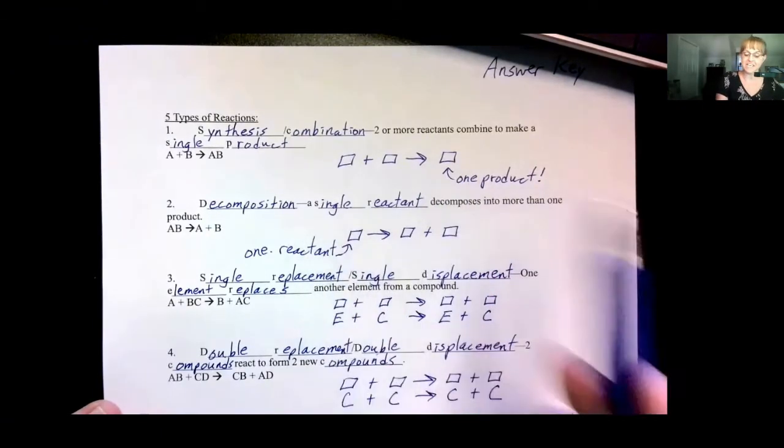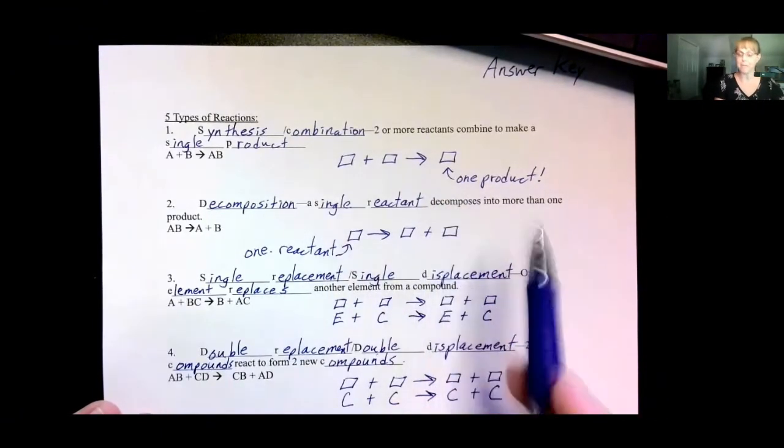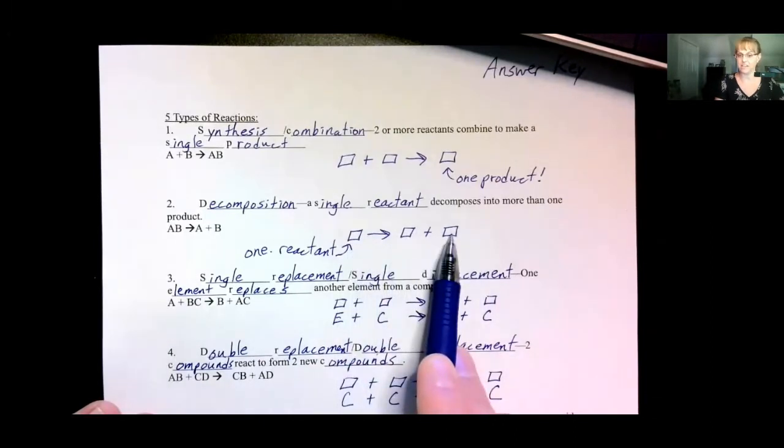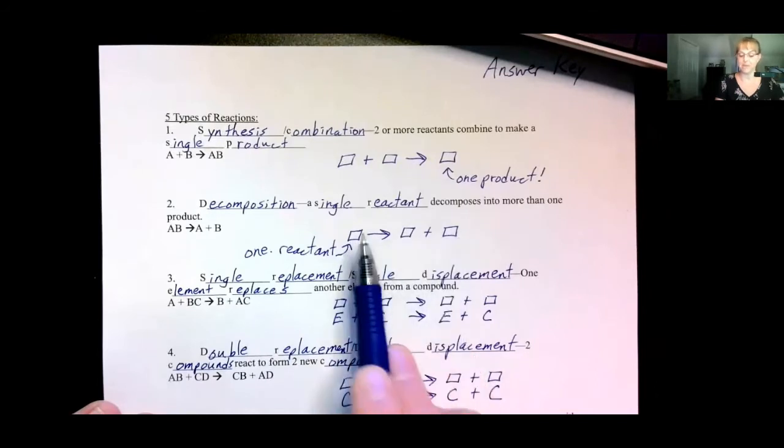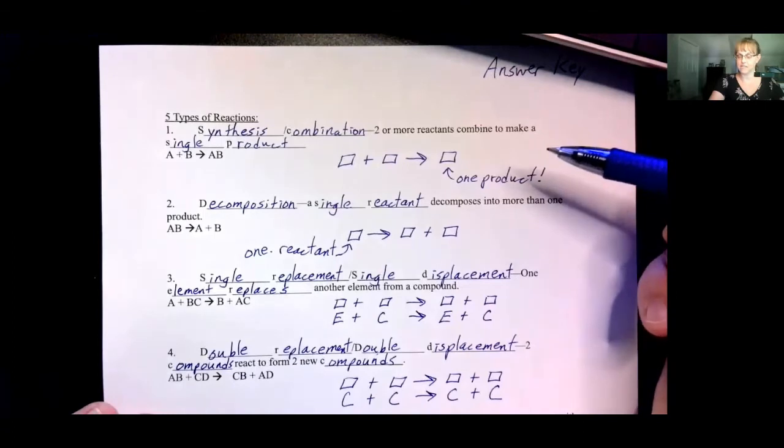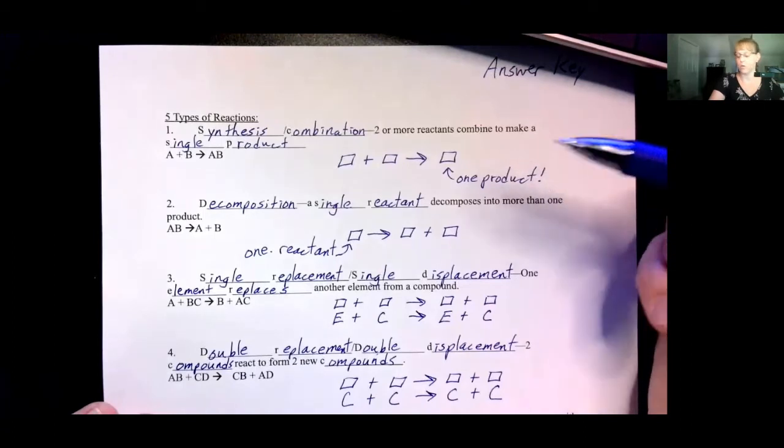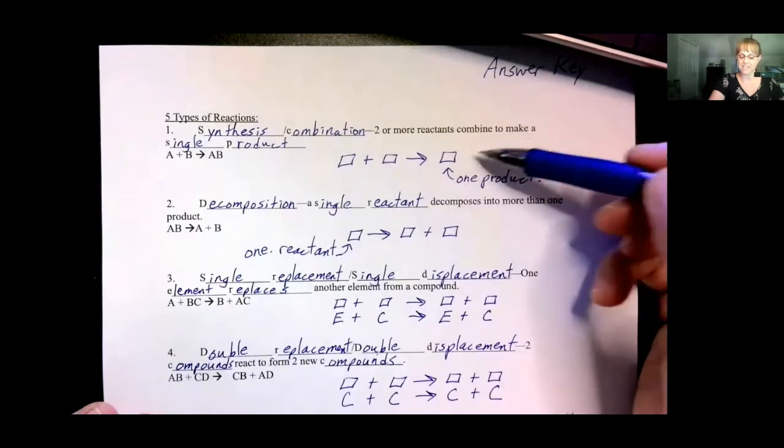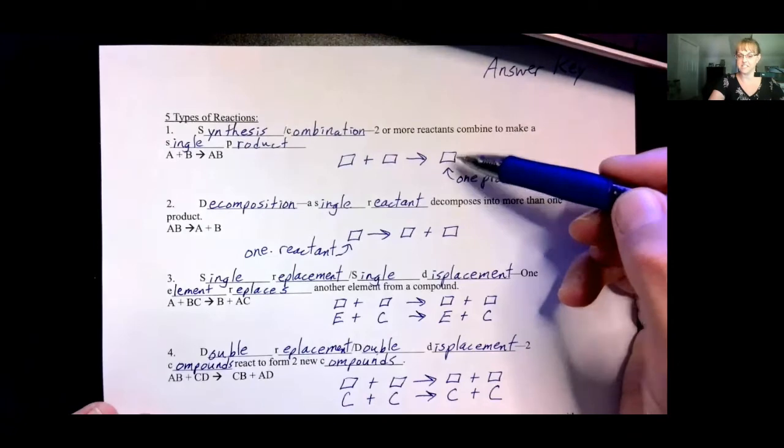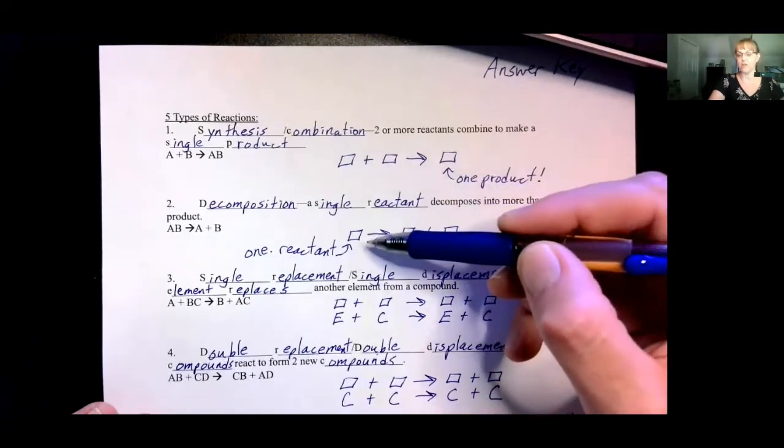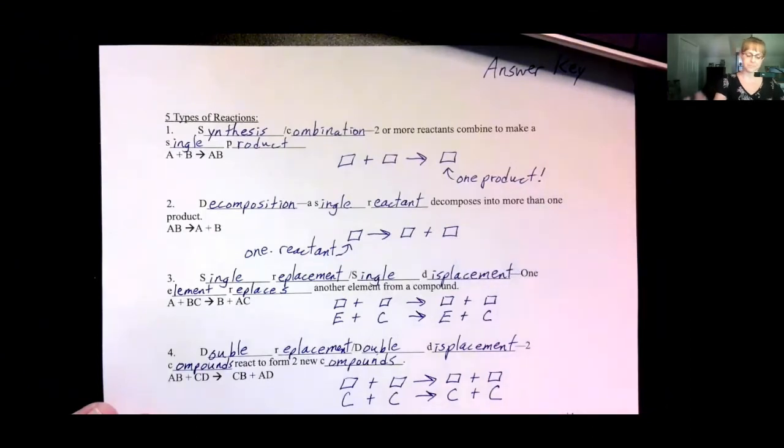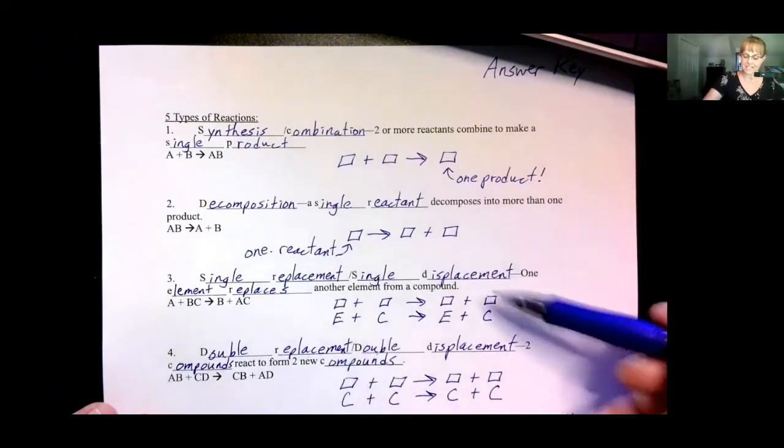A decomposition is the exact opposite of a synthesis. There is one reactant and more than one product. You will probably have three compounds: one before and two after. If you only have three compounds in your balanced equation or unbalanced equation, you either have a synthesis or decomposition. If there's one after the arrow, it's a synthesis. If it's one after the arrow, it is breaking down or decomposing into more than one thing.